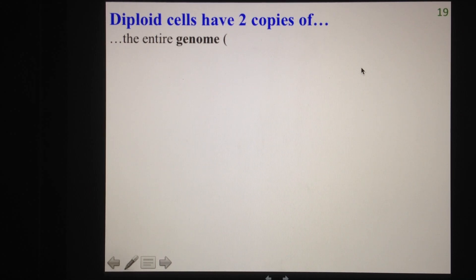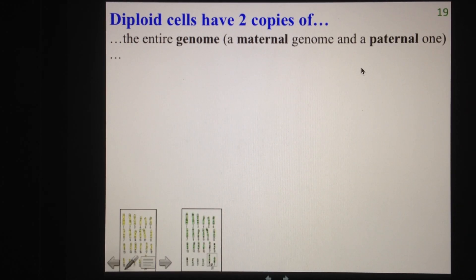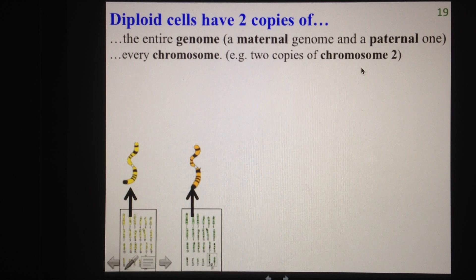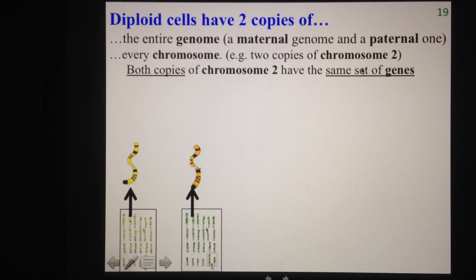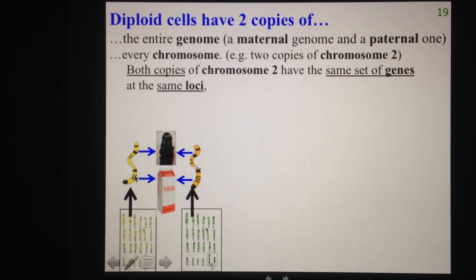Diploid cells such as your skin cells have two copies of your entire genome — a maternal genome from your mom and a paternal genome from your dad. That also means you have two copies of every chromosome. For example, you have two copies of chromosome 2. Both copies have the same sets of genes — for instance, chromosome 2 might have the gene for melanin for hair color, and lactase for digesting milk. Those genes are found at the exact same locations, the same loci, on these chromosomes. When chromosomes have the exact same genes at the exact same loci, we call these homologous chromosomes.